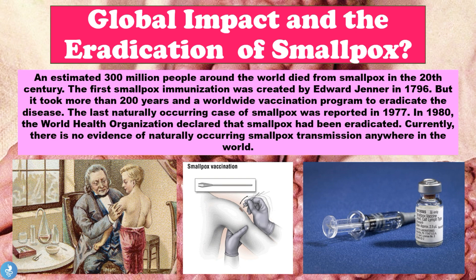An estimated 300 million people around the world died from smallpox in the 20th century. The first smallpox immunization was created by Edward Jenner in 1796, but it took about 200 years and a worldwide vaccination program to eradicate the disease completely. The last naturally occurring case of smallpox was reported in 1977, and in 1980 the World Health Organization declared that smallpox had been eradicated. This is a great victory for science, medicine and humankind, much of which is attributed to Edward Jenner, who formulated the first vaccine for the smallpox virus.